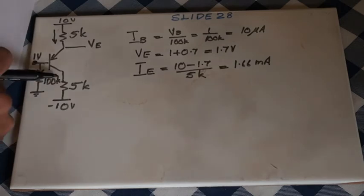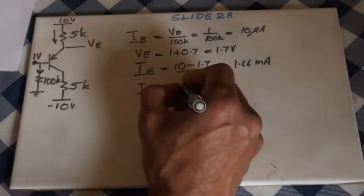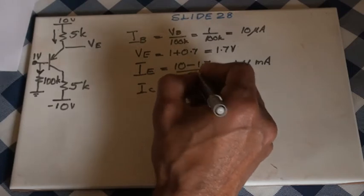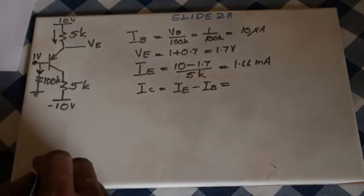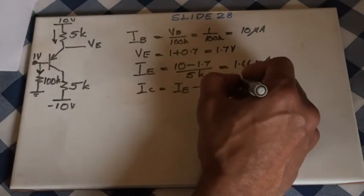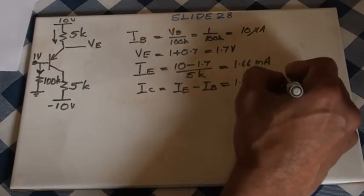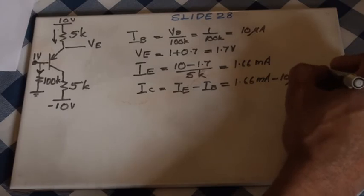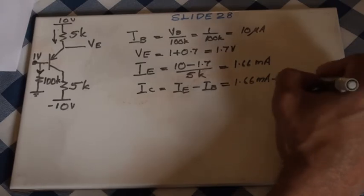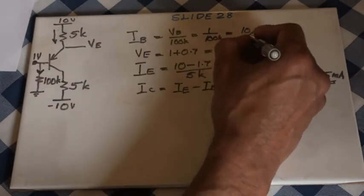It's easy to find collector current now. Collector current IC equals IE minus IB, that is 1.66 milliamperes minus 10 microamperes, which equals 1.65 milliamperes. So we've got all three currents that we're looking for.